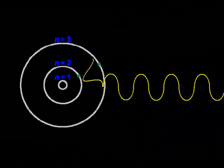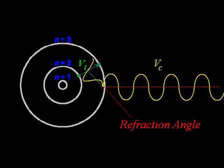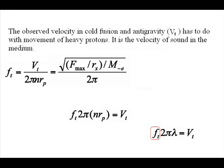When a photon enters an atom, it slows down to this velocity. This velocity is proportional to frequency times wavelength.